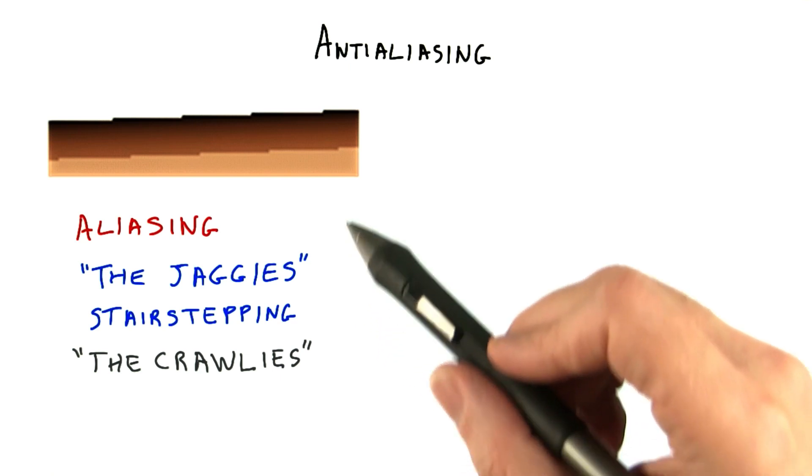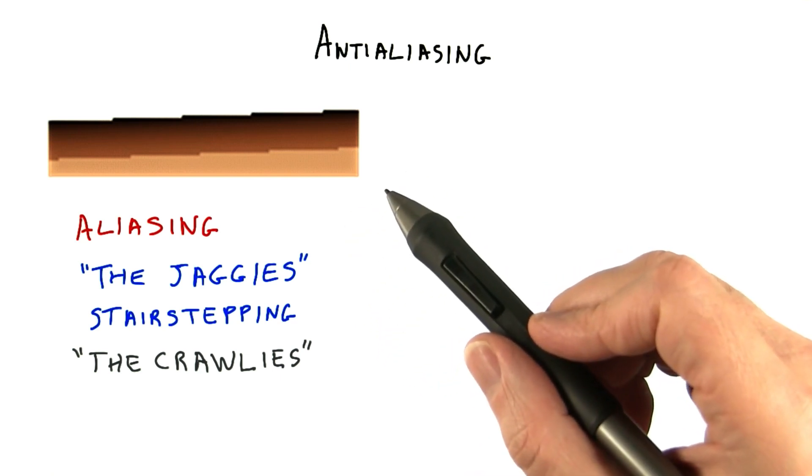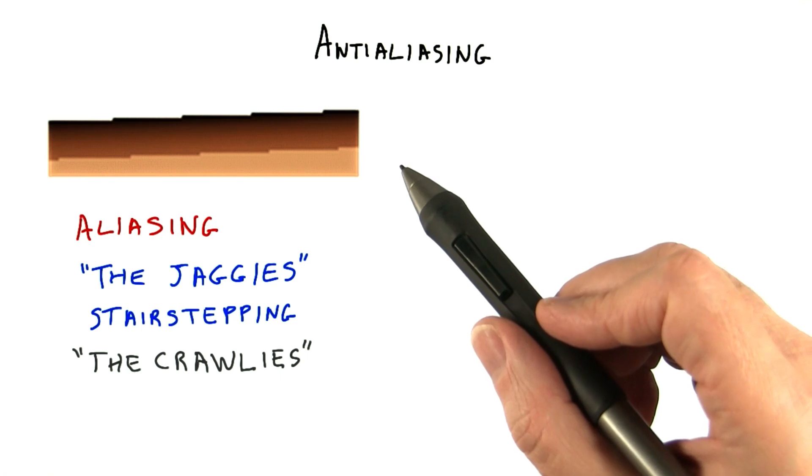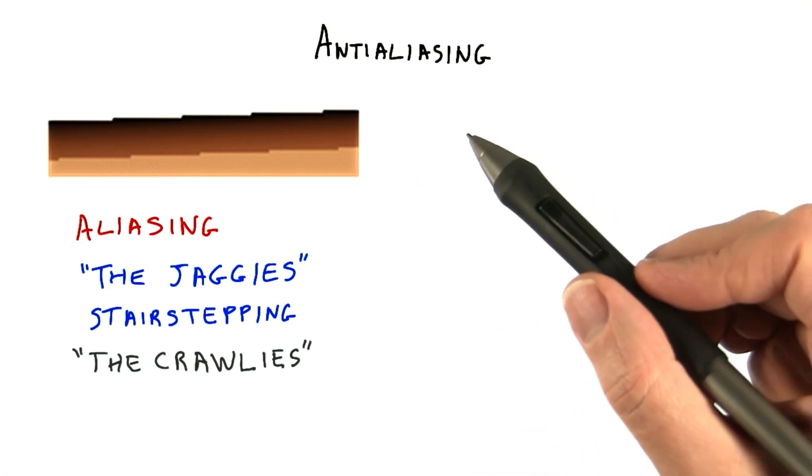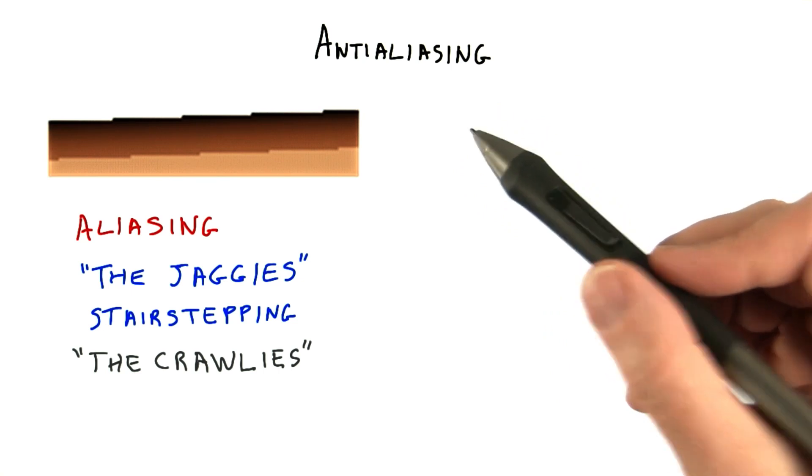What we'd like to do is get a nice, smooth result, where each edge pixel is shaded proportionally to how much of it is covered by each object overlapping it. If the pixel is mostly covered by a triangle, use more of the triangle's color. Less, use less.